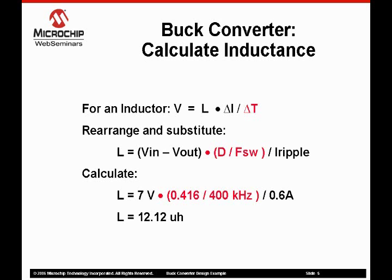The power dissipated due to copper losses is I-load squared times the ESR. Here it is 0.15 watts. Note that core loss characteristics are often difficult to find.